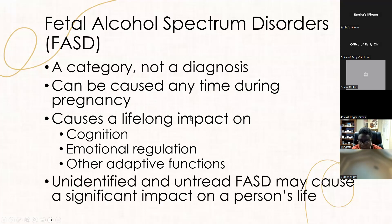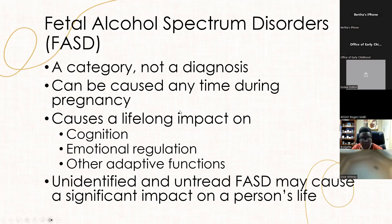The key reason why it's important for your populations to know this is that unidentified and untreated FASD can cause impacts in secondary conditions, like being involved in the juvenile system or having to go to an ALE classroom. Those secondary conditions occur because the FASD is not identified and not treated appropriately.